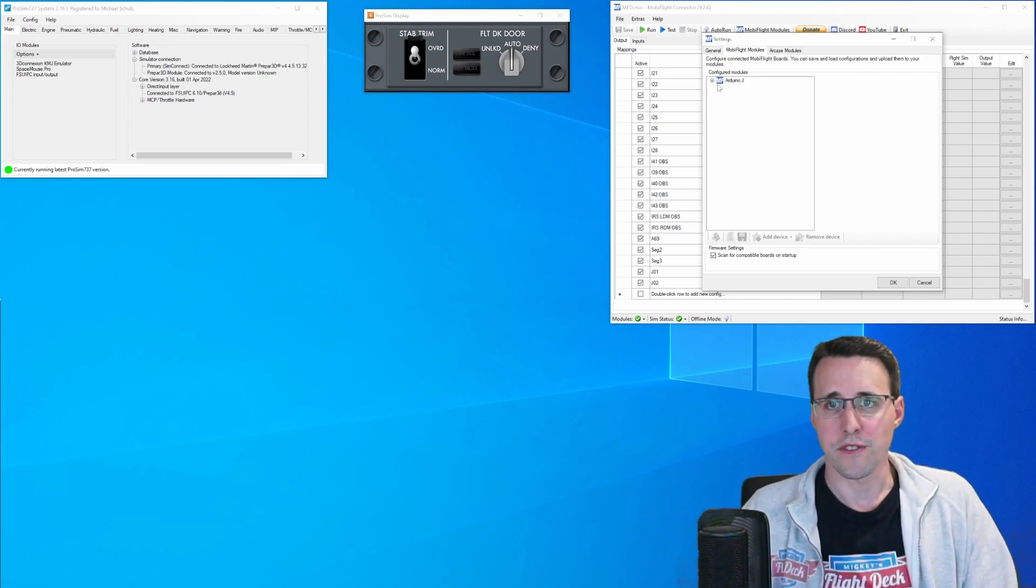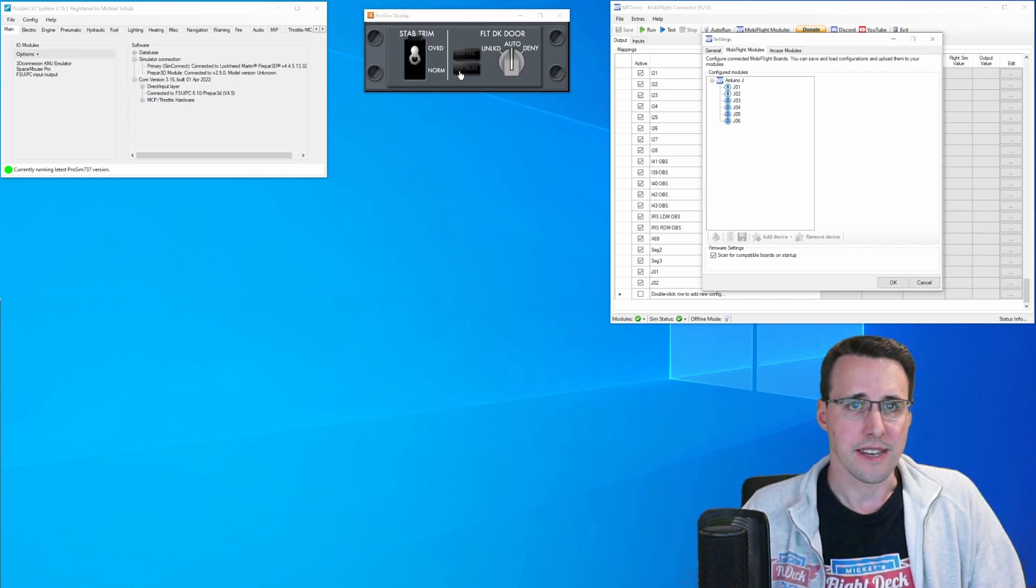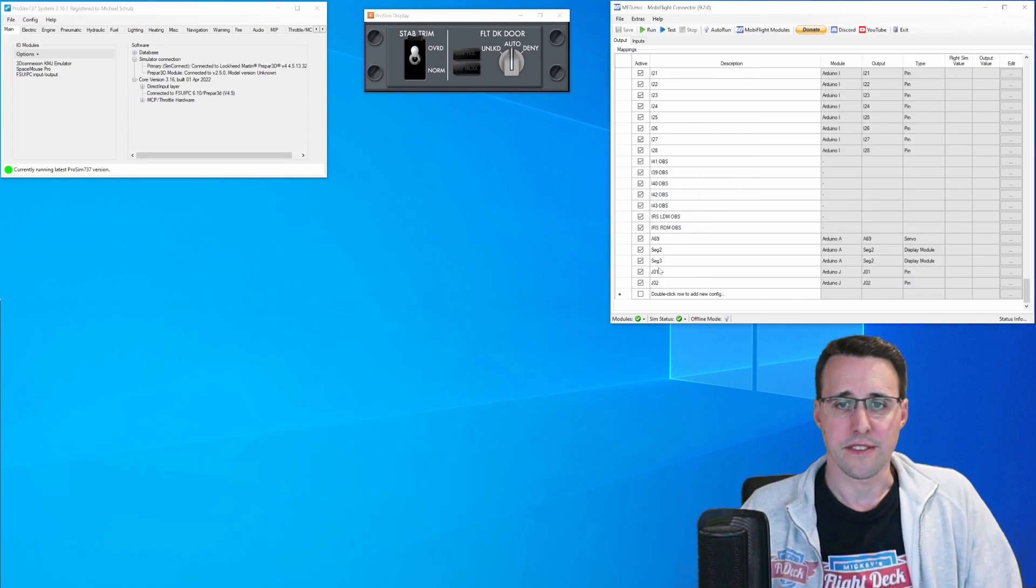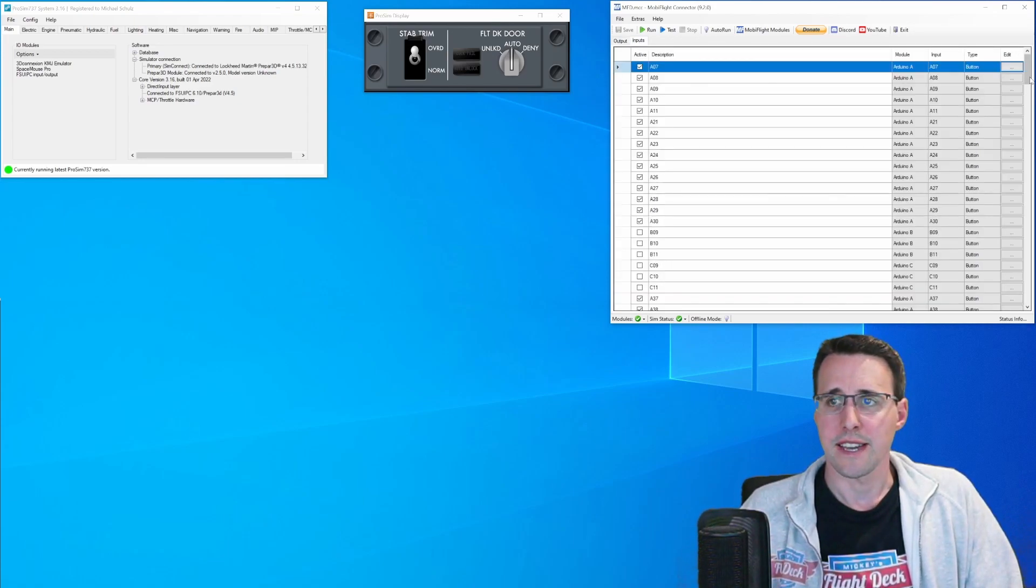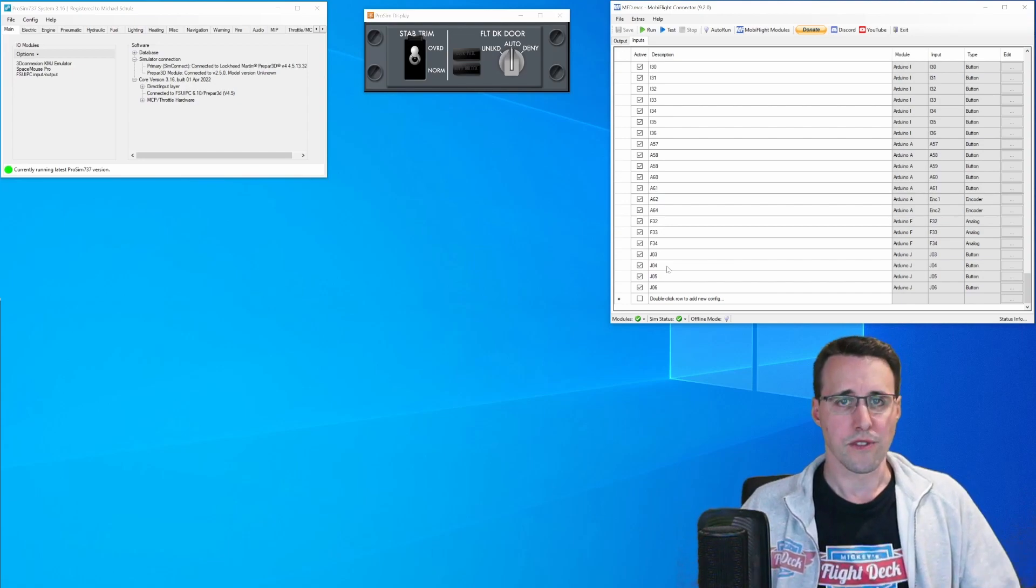And here you can see I have already declared six devices. The first two are the two LEDs here, the lock fail and auto unlock LED. And then we have four buttons for the three states of the Flytec door and the stabilizer trim button. And so I have done the two output configuration here for the LEDs and I have done four input configuration for the buttons.